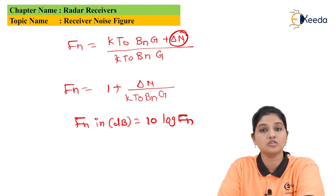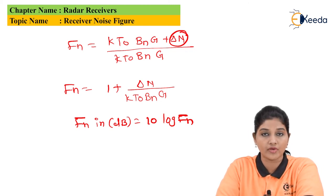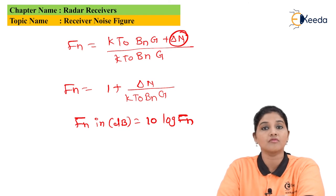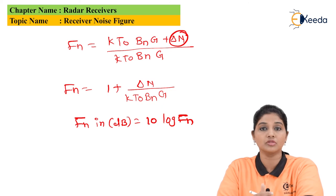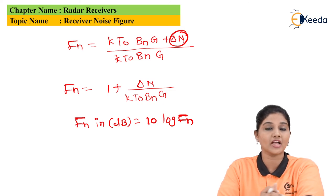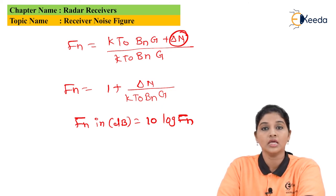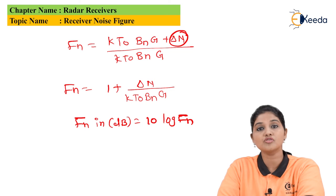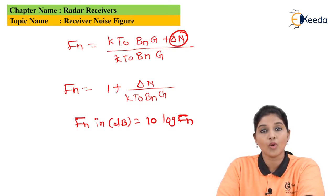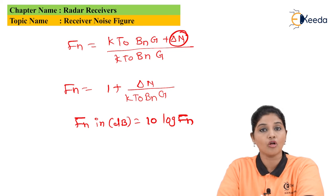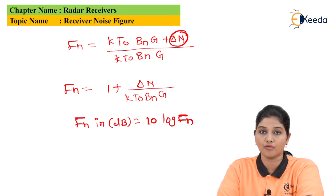Sometimes the noise figure is also called the noise factor. When considering the noise figure, it is always assumed that the input and output networks are matched with each other. In some applications it is possible to achieve less noise even in the case of mismatching, but we always assume that there is matching between the input and output networks.